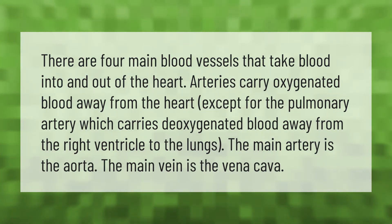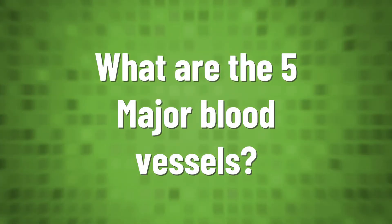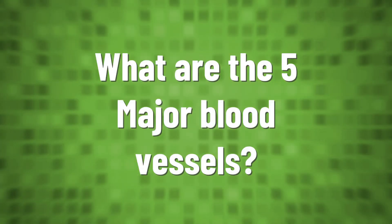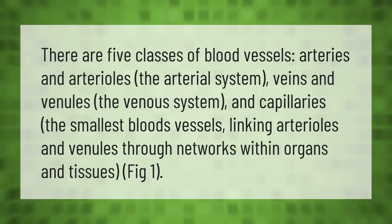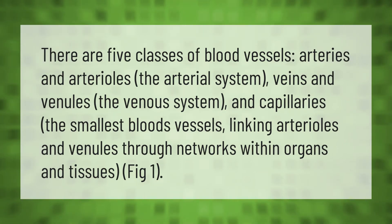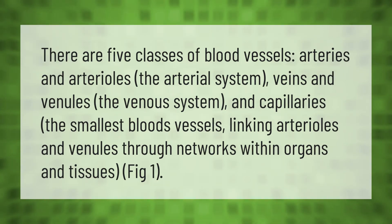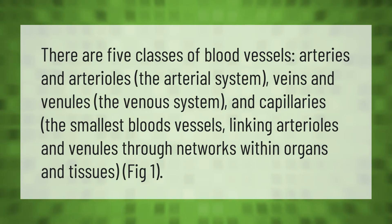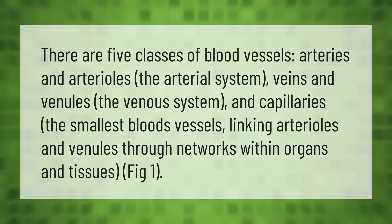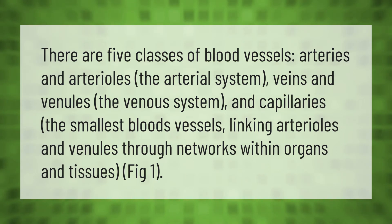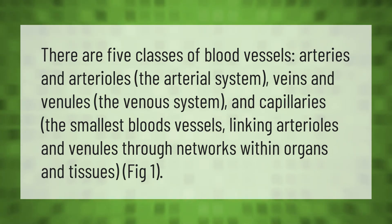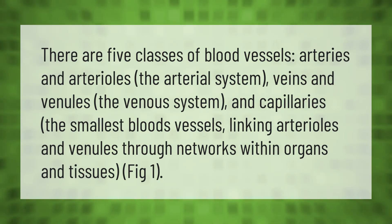There are five classes of blood vessels: arteries and arterioles forming the arterial system, veins and venules forming the venous system, and capillaries — the smallest blood vessels — linking arterioles and venules through networks within organs and tissues.